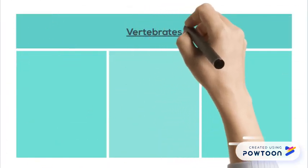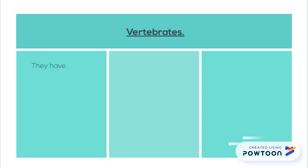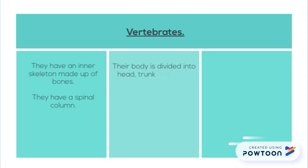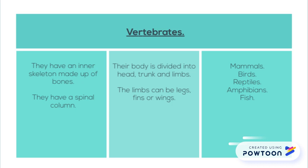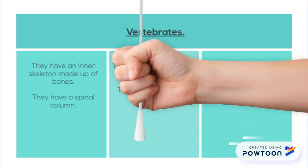Characteristics of vertebrates. They have an inner skeleton made up of bones. They have a spinal column. Their body is divided into head, trunk and limbs. The limbs can be legs, fins or wings. And finally, they can be mammals, birds, reptiles, amphibians and fish.